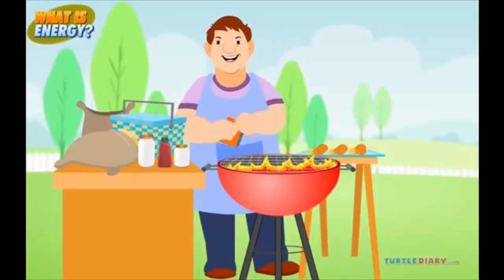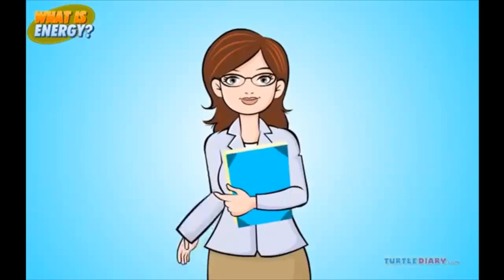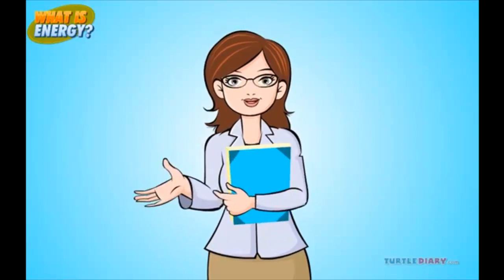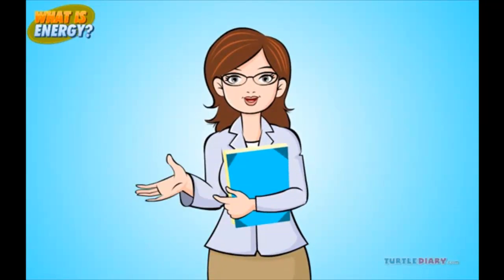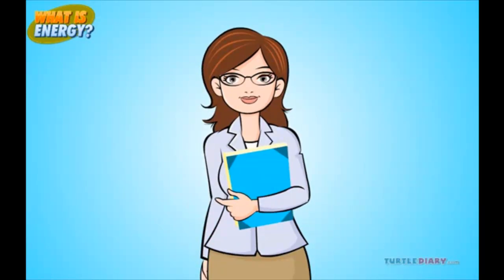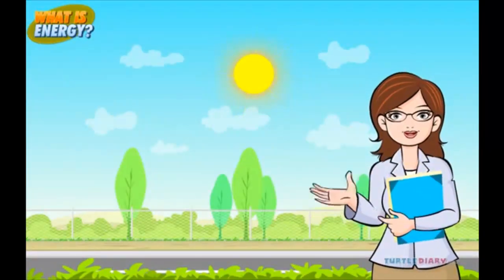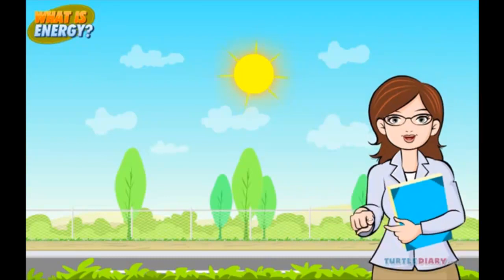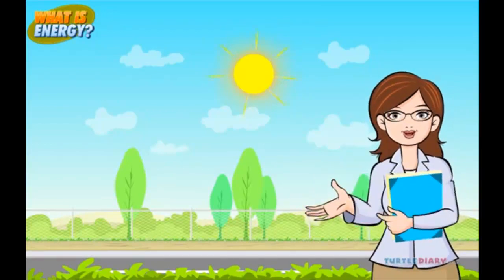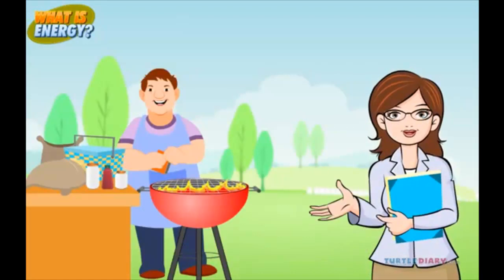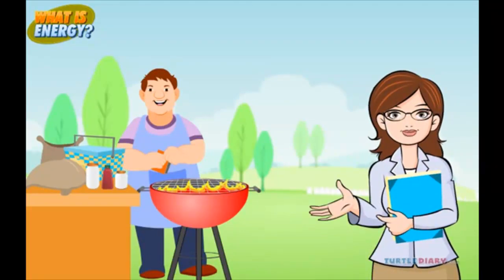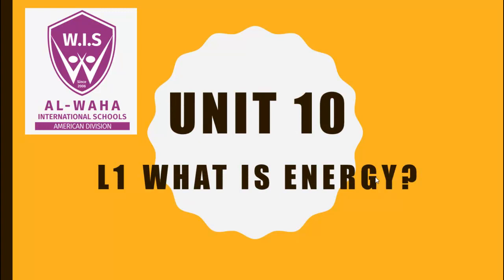Uncle Bob made a fire in the grill to cook the food. As you can see, there are many different ways to use energy. Did you know there are also many different ways to get energy? The sun gives us light and heat energy. What kind of energy did Uncle Bob use to cook the food? He used fire — that's heat energy. I will stop at this point now and we will complete our lesson in the next session. See you, bye-bye.